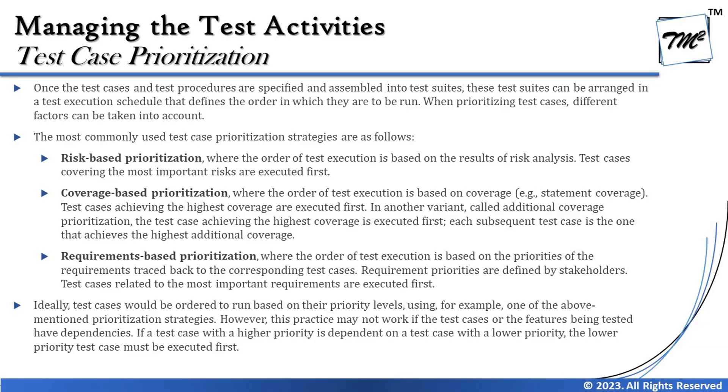Ideally test cases would be ordered using one of the above prioritization strategies. However, this may not always work if test cases or features have dependencies. If a test case with higher priority is dependent on a test case with lower priority, the lower priority test case must be executed first. Dependencies act as blockers — the blocking test must be executed first before running the higher-priority one. There is an approach to blending priority and dependencies together to define the right order of execution, which we'll look at next.